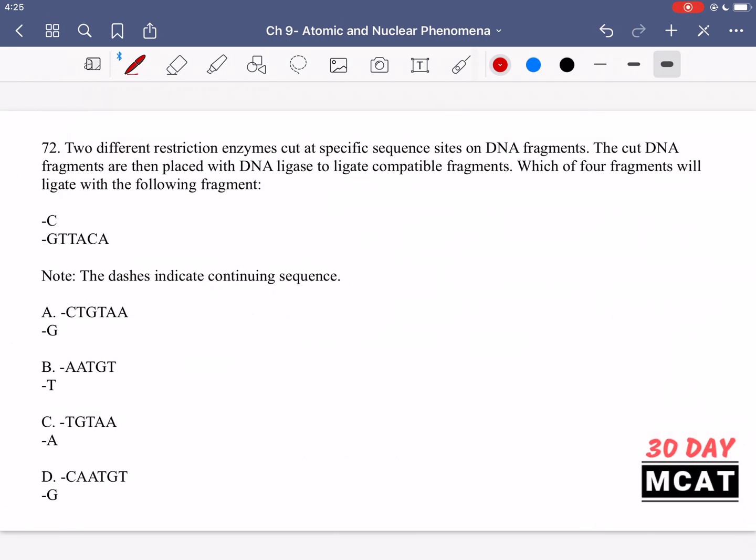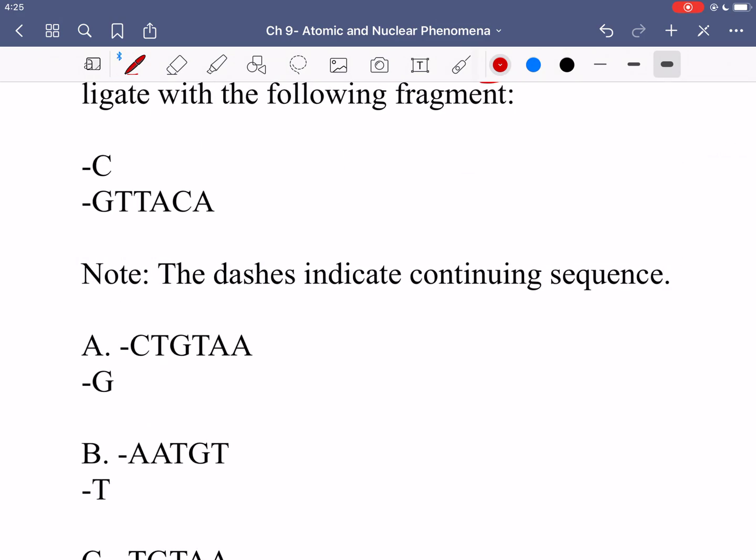In question 72 it says two different restriction enzymes cut at specific sequence sites on DNA fragments. The cut DNA fragments are then placed with DNA ligase to ligate compatible fragments. Which of four fragments will ligate with the following fragment? So we want DNA ligase to ligate some compatible fragments. So we want something which is complementary to the strand and then the two strands will ligate together.